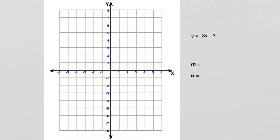This next problem: y = -3x - 3. Right away, this is less friendly. We have negative 3x instead of just x, and we have a negative constant — minus 3 instead of plus 1. So how is that going to change things?